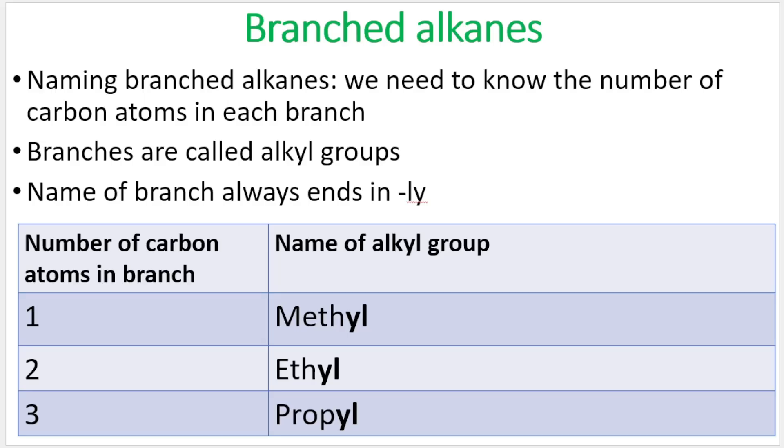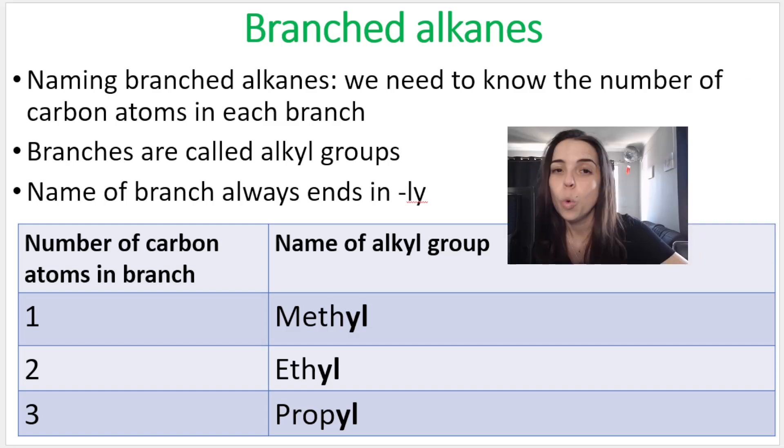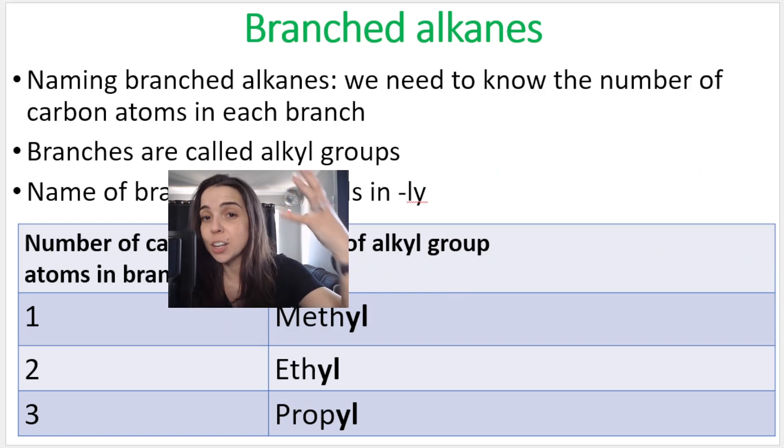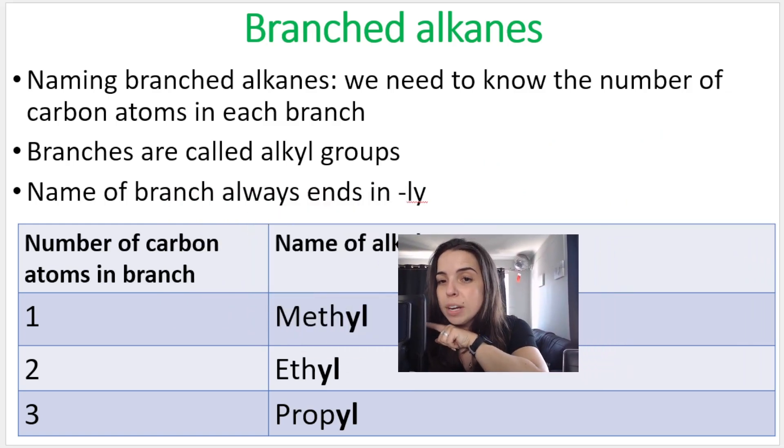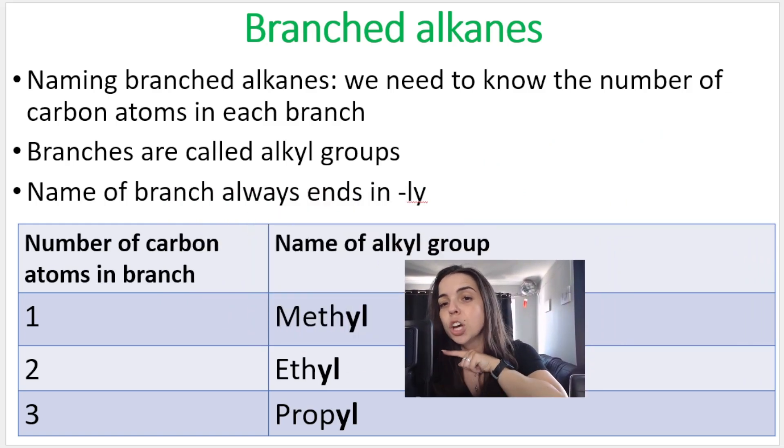Then you need to look out for branches or substituents. If your branches contain carbon and hydrogen, we call them alkyl groups. If there's one carbon in the branch, it's called a methyl branch, two carbons in the branch, it's an ethyl branch, and so on.